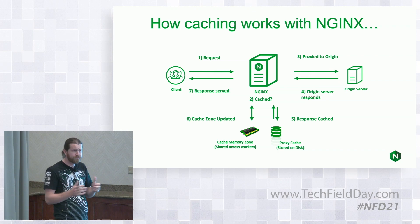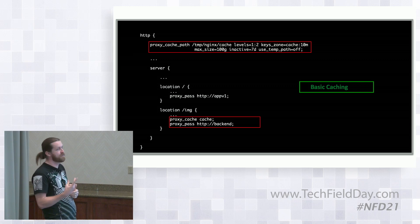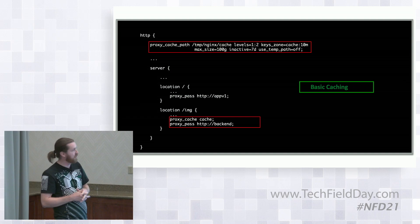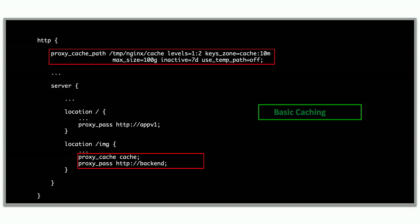Setting up caching is super easy. In a standard HTTP configuration, there are really only two directives needed. One is proxy_cache_path, which specifies where on disk to store cache data. You can set levels for directory structure, set a name for the cache memory zone — in this case called 'cache' — and a size for the number of keys stored. max_size is the maximum disk space Nginx will use for that directory. The inactive parameter acts as a cleanup timer — after seven days it slowly deletes anything not used. Then in the location block you just specify proxy_cache pointing at your backend.